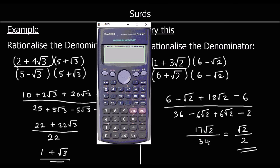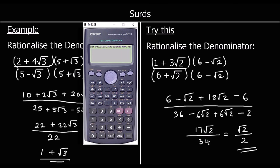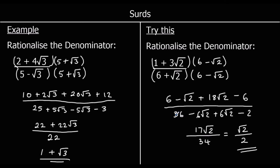I just want to show you that you can check answers on the calculator. If I type in 1 plus 3 root 2 over 6 plus root 2, I get the answer root 2 over 2. The calculator will simplify and automatically rationalise a denominator — but if you're being asked this question, you probably won't have a calculator.